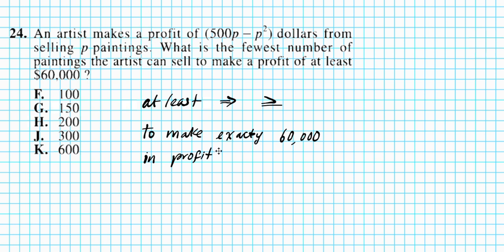So to make exactly the lowest possible acceptable profit, to make exactly $60,000 in profit, we are simply going to set the profit quantity right here, 500p minus p squared. This profit expression, we're going to set it equal to the desired profit, $60,000. This is the lowest possible profit that the artist wants to make. It could be greater, that's fine, but we want to find the least amount.